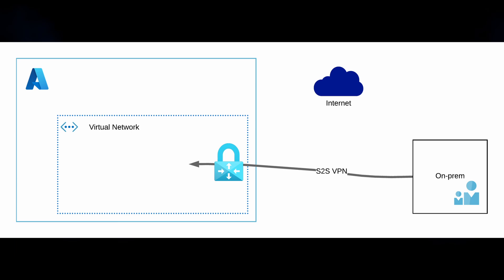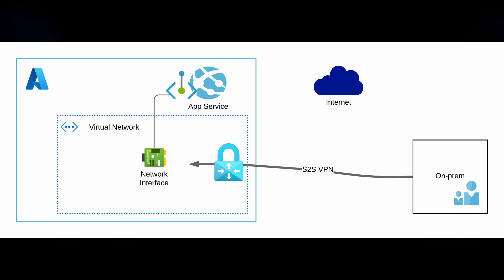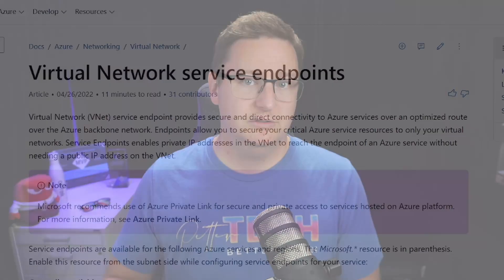Say you have an internal website that is only to be accessed from your internal network. You already have a connection from your on-prem network, where your users are located, to Azure — but you can't host that website on an app service, right? Because that would expose it publicly. No, you just put a private endpoint right in there, and your users can connect to that private endpoint's private IP, routing that traffic across your ExpressRoute or VPN.